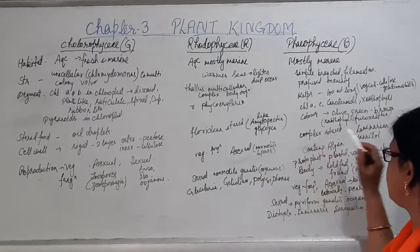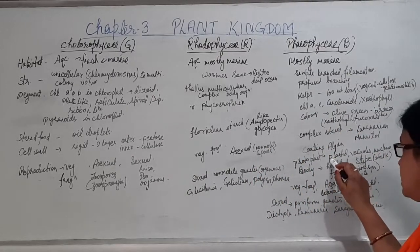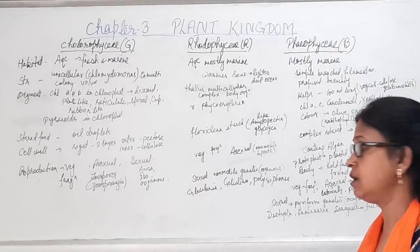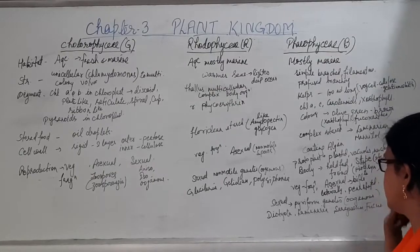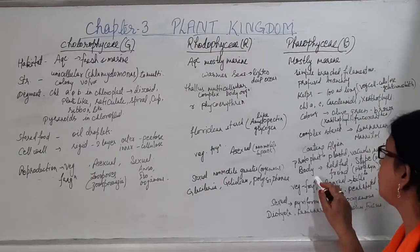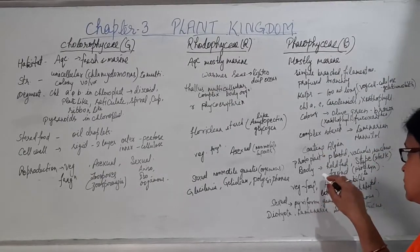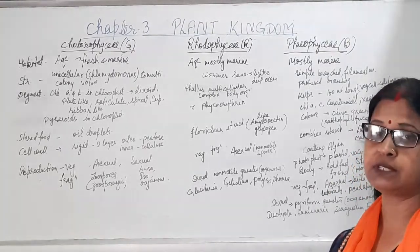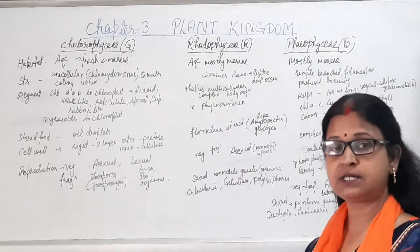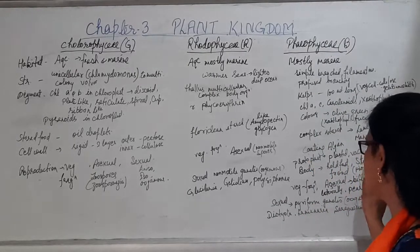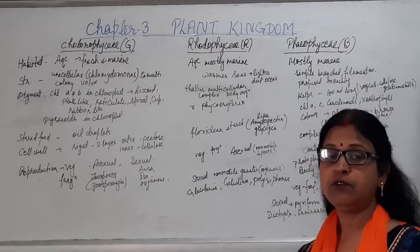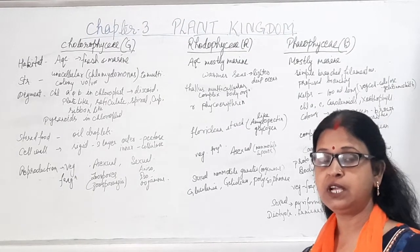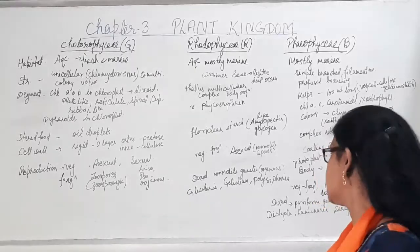In Phaeophyceae, the plastids are centrally placed. The plant body consists of three parts: hold-fast, which is attached to a substratum; the stalk or middle part called stipe; and the frond, which is the flattened photosynthetic part capable of photosynthesis.